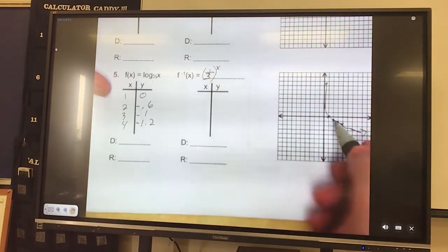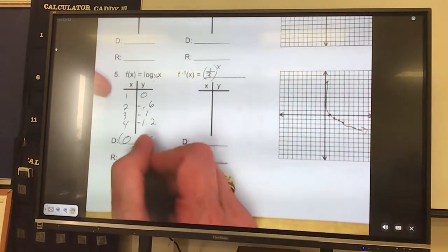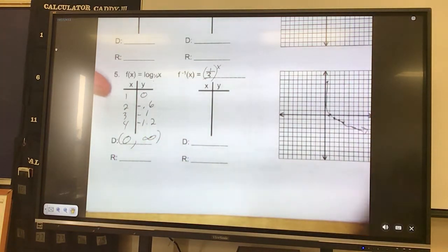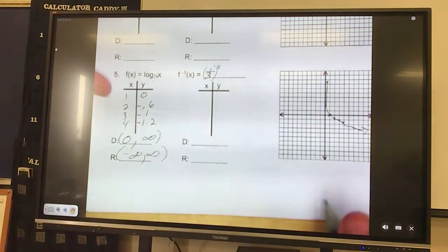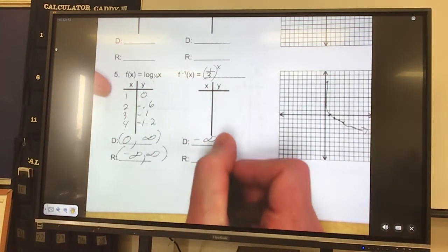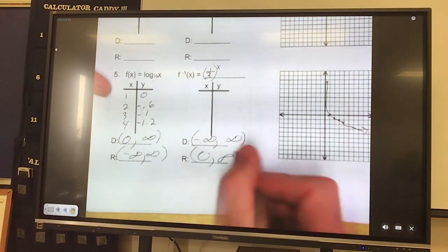So my domain, how far left? It goes close to 0 but doesn't touch it, and it goes forever to the right. It goes down forever, so negative infinity, and up forever, positive infinity. So I know that these should be flipped.